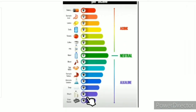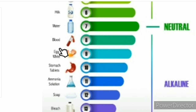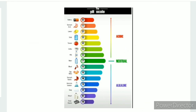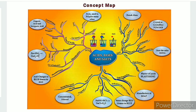For basic substances, examples include blood, egg white, stomach tablets, ammonia solution, soap, bleach, and drain cleaner. These are all bases with a pH greater than 7.